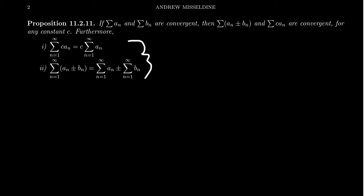In slightly more expanded form, the series of C times A_n is the same thing as C times the series of A_n, and hence convergence will be the same for these two things. Or if you take the series where you add together a sequence, or even subtract the sequence, that series will be the same thing as the series of the A's and B's separately, and you add together those series.